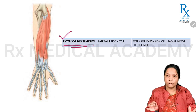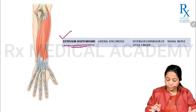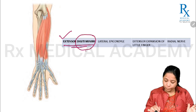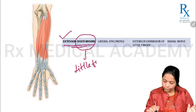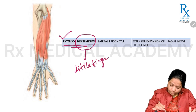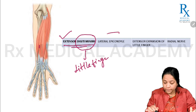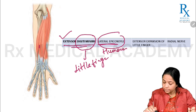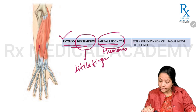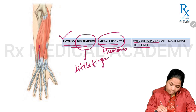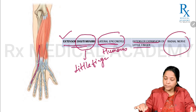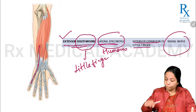The next muscle is extensor digiti minimi, which produces extension at the little finger — 'digiti minimi' referring to the little finger. It arises from the common extensor origin at the lateral epicondyle of the humerus and inserts onto the extensor expansion of the little finger. Here you can see the tendon of extensor digiti minimi inserting onto the extensor expansion of the little finger. It is supplied by the radial nerve.